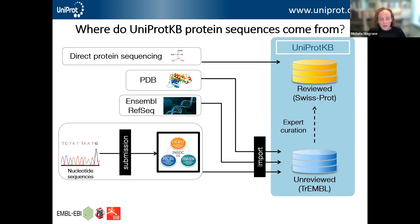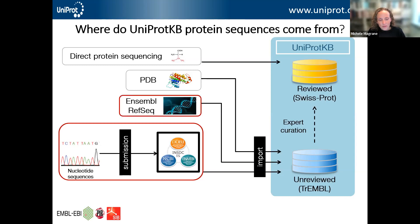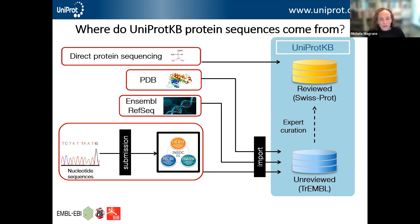Where do all of these protein sequences come from? The vast majority come from translations of coding regions in nucleotide sequences submitted to the databases of the INSDC — the International Nucleotide Sequence Database Collaboration — made up of ENA at EMBL-EBI, GenBank at the NCBI in the US, and the DNA Data Bank of Japan. We also import sequences from resources that do their own gene predictions, such as Ensembl and RefSeq, from the Protein Data Bank, and we also accept submissions of directly sequenced proteins, providing accession numbers that researchers can use in their publications.